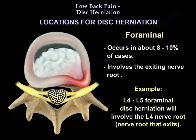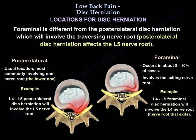The second location of disc herniation is foraminal, occurring in about 8 to 10 percent of cases. It involves the exiting nerve root. For example, an L4-L5 foraminal disc herniation will involve the L4 nerve root — the nerve root exiting at L4. This is different from posterolateral disc herniation, which involves the traversing nerve root; in the case of L4-L5, the posterolateral disc herniation will involve the L5 nerve root.